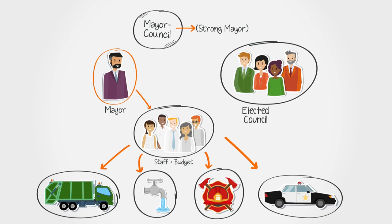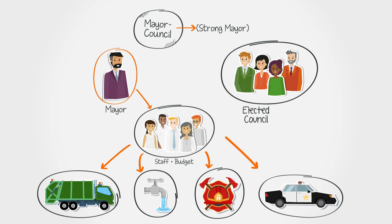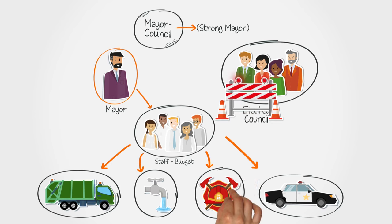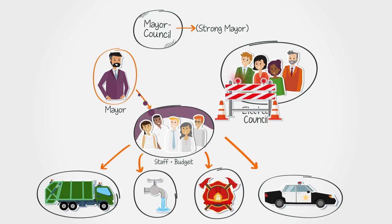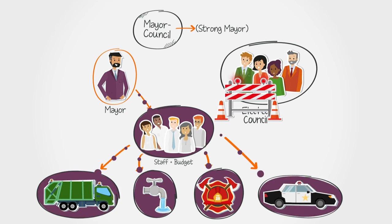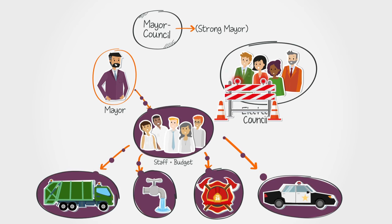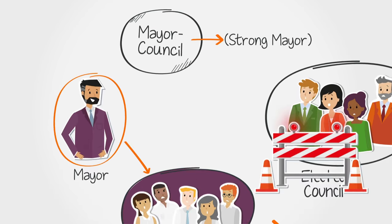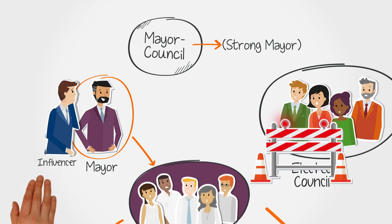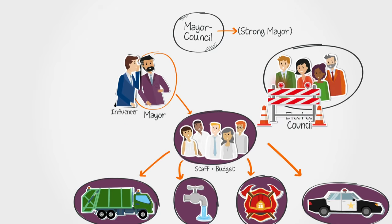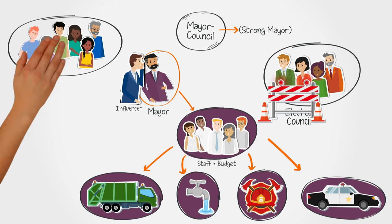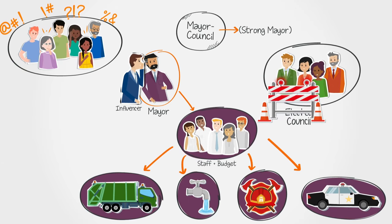Having a single politician at the top of the structure has its disadvantages. The elected council is largely unable to affect change because the mayor is solely responsible for the budget and staffing. Political agendas can contaminate what should be transparent, ethical and efficient service delivery, and it also leaves that go-to person more susceptible to the influence of special interest groups, leaving ordinary voters with less say about what goes on in their community.